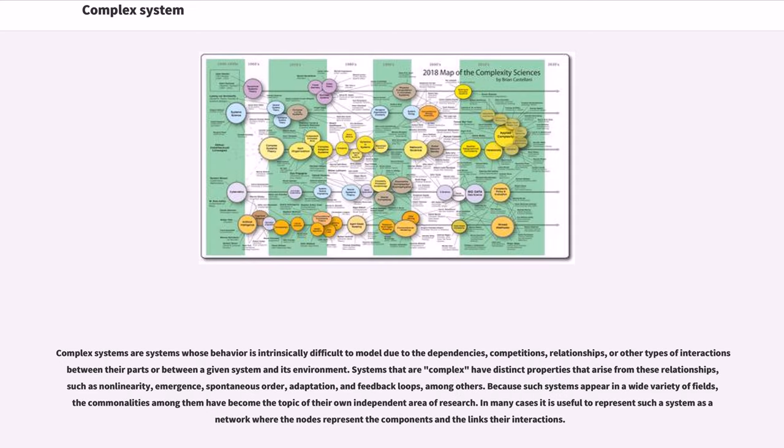Complex systems are systems whose behavior is intrinsically difficult to model due to the dependencies, competitions, relationships, or other types of interactions between their parts or between a given system and its environment.